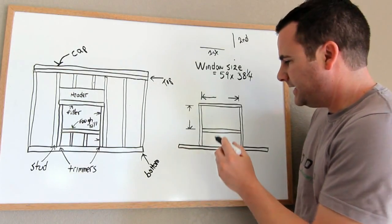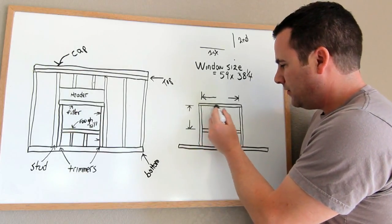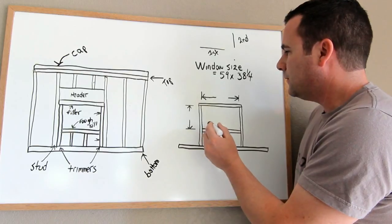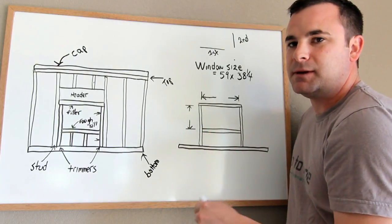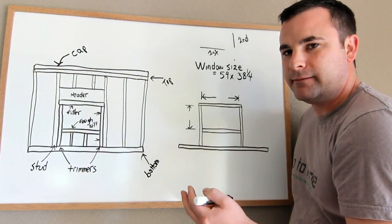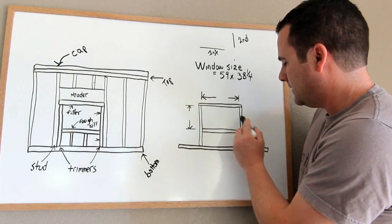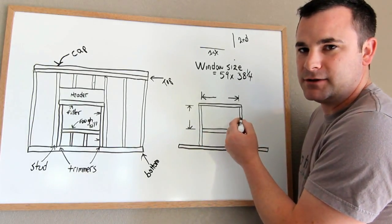Now you want a little 3 eighths gap all the way around your perimeter. So 3 eighths plus 3 eighths is 3 quarters. So if you have a 3 eighths gap here, 3 eighths gap there, added together is 3 quarters.